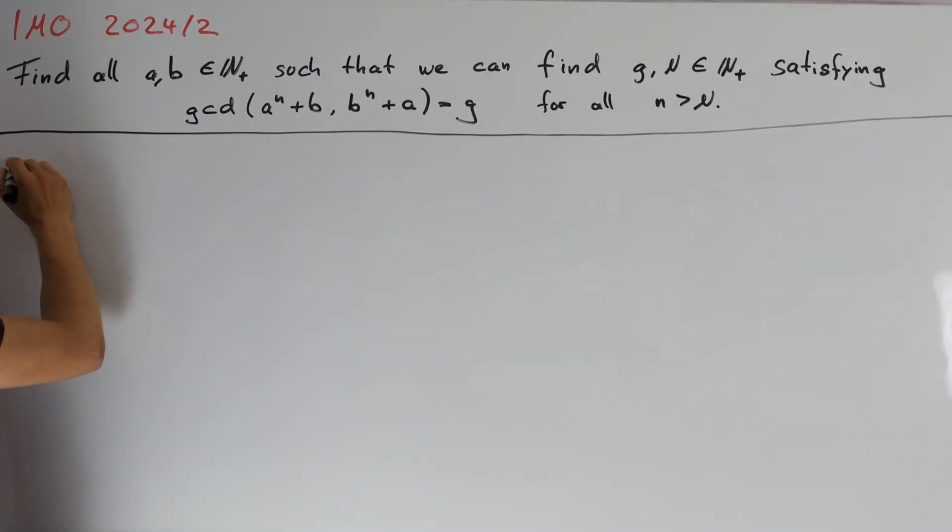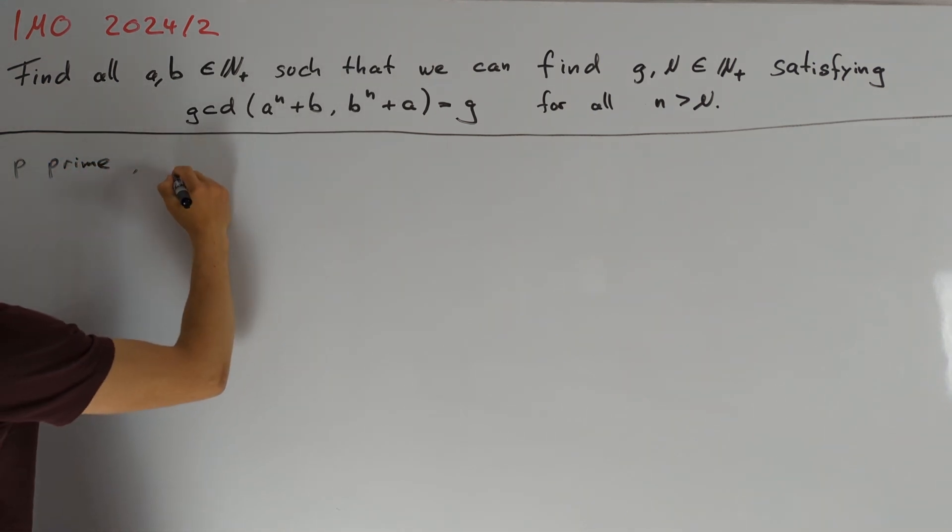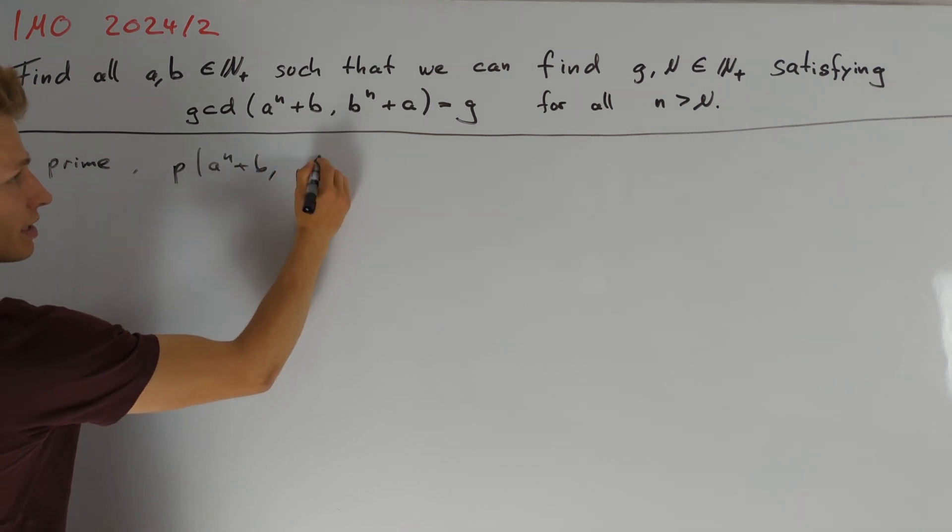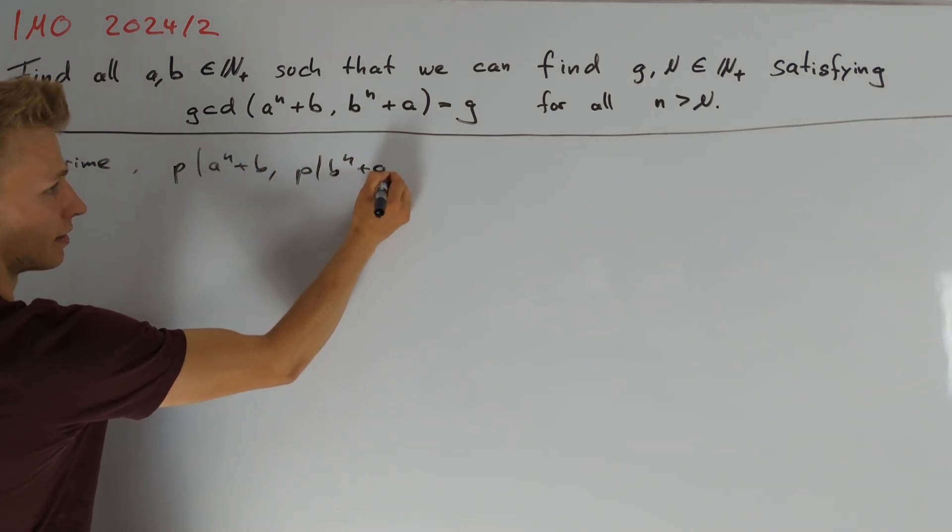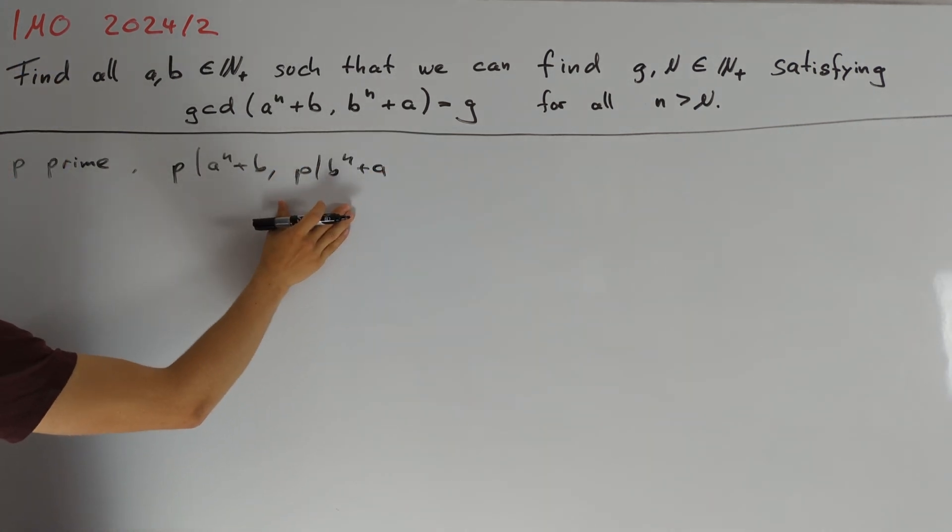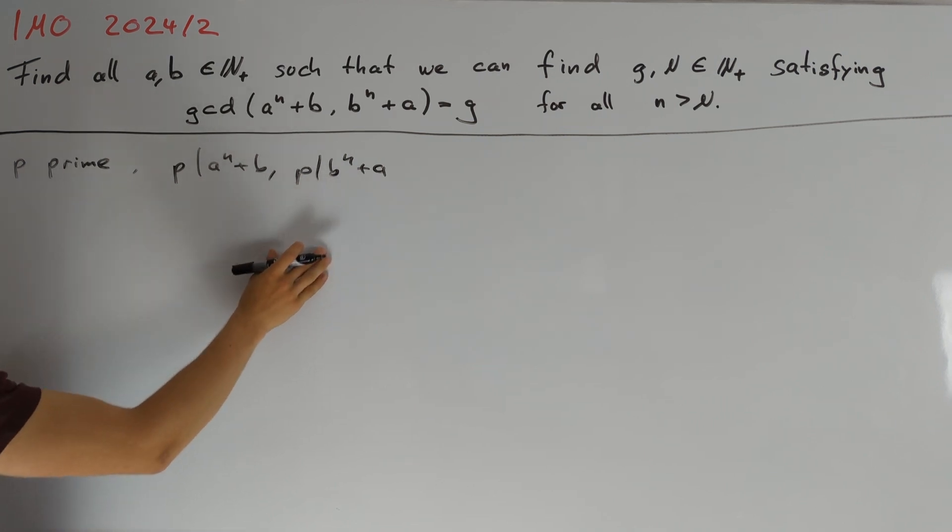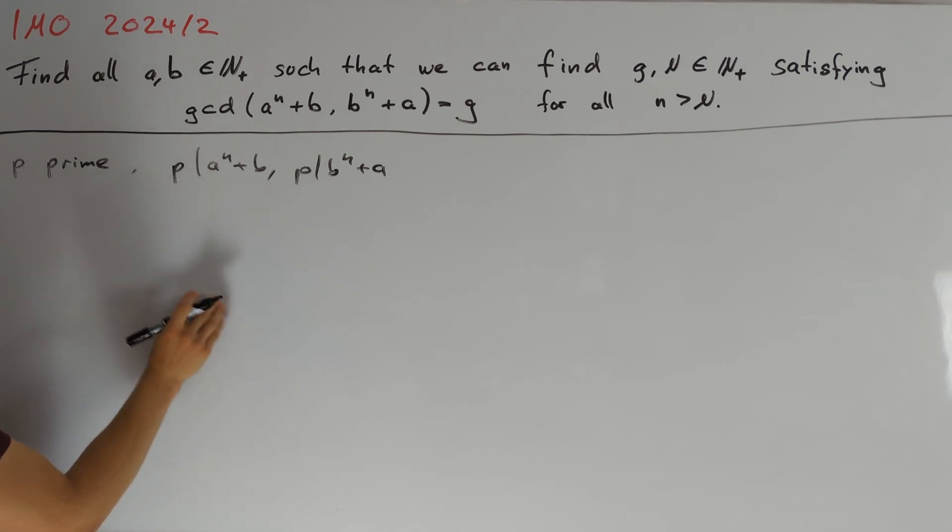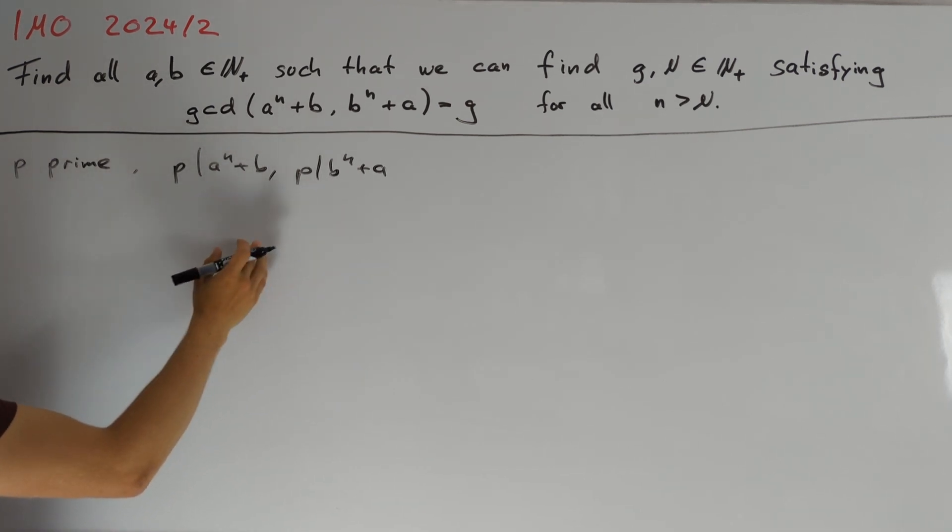For doing this, let's take a prime number p such that p divides both of these terms. So p should divide a to the n plus b and p divides b to the n plus a. Here n is just an arbitrary large natural number. We want to bring these two right hand sides here together. And one way of doing this is, for example,